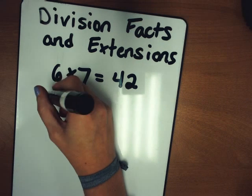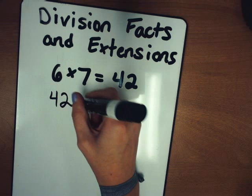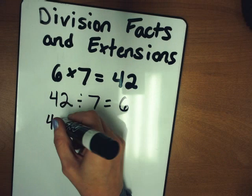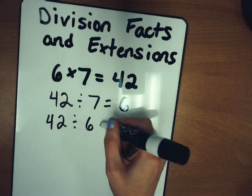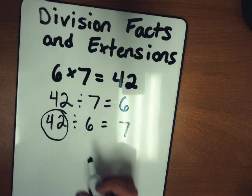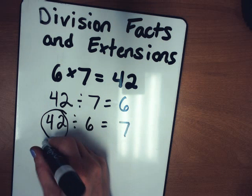So you should have written 42 divided by 7 equals 6 or 42 divided by 6 equals 7. So when we talk about this first number, big number, that's our dividend.